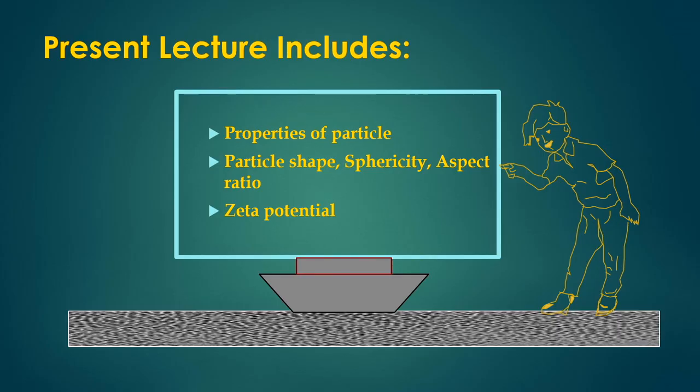we will learn about characteristics of a single particle — properties of a particle, shape of the particle, sphericity, aspect ratio, and also zeta potential. When particles are mixed with fluids, you get a slurry, and properties like effective density and effective viscosity of the slurry change based on particle concentration. Zeta potential measures the dispersity of solid particles in a liquid, and how to measure it will also be discussed.